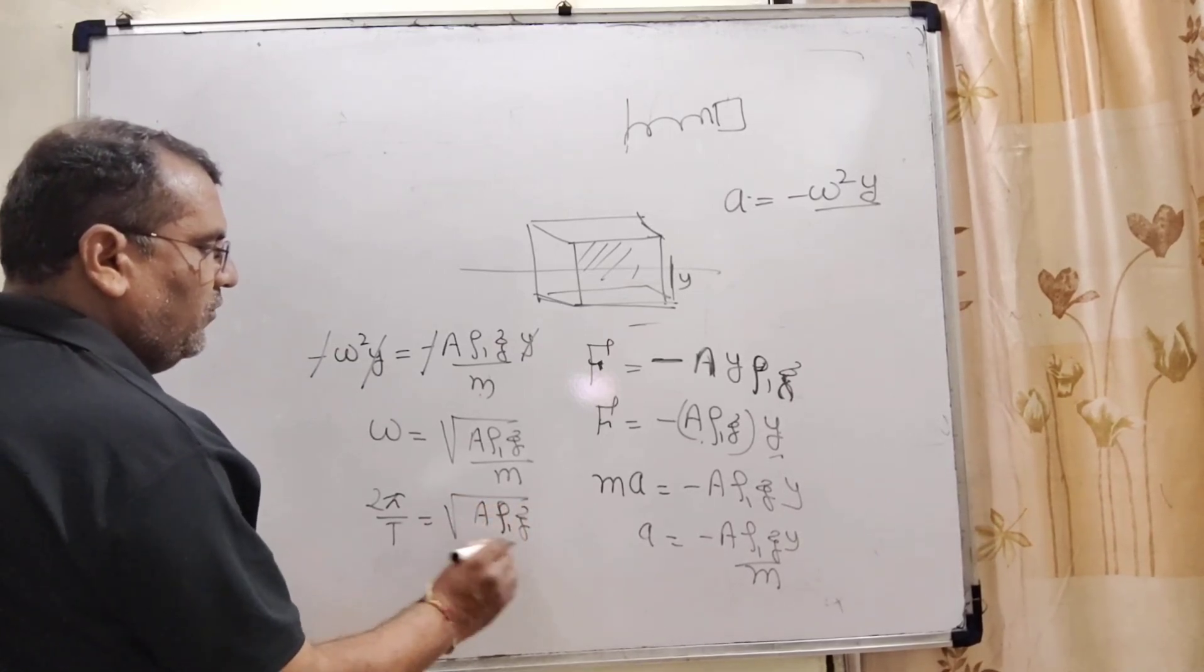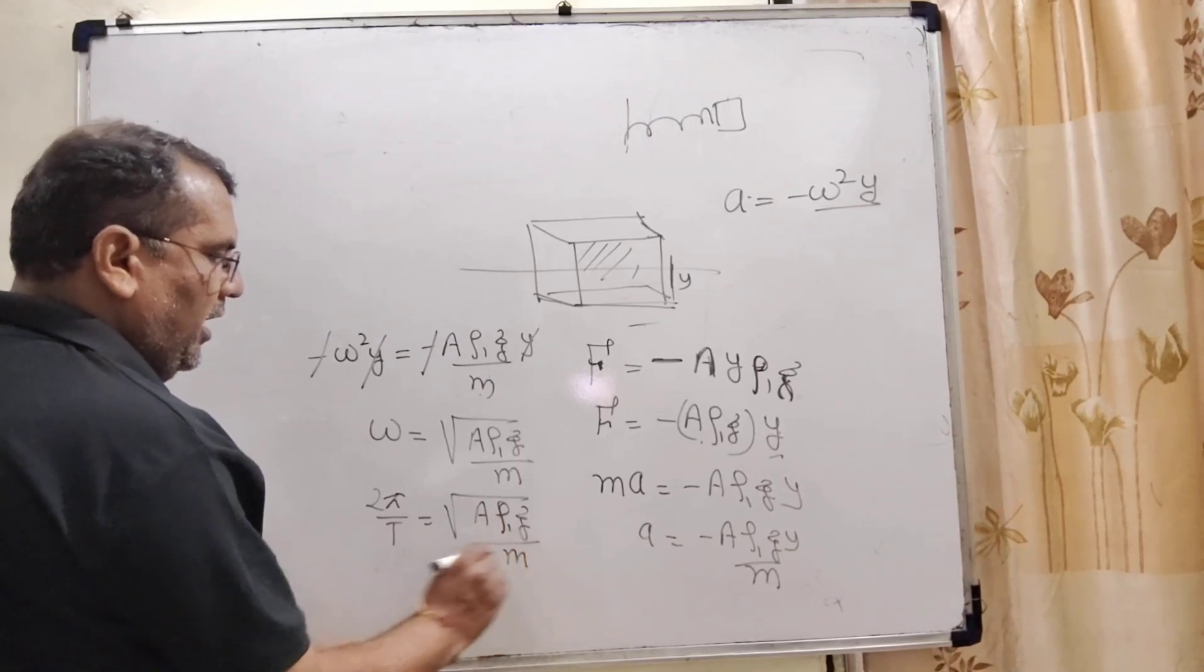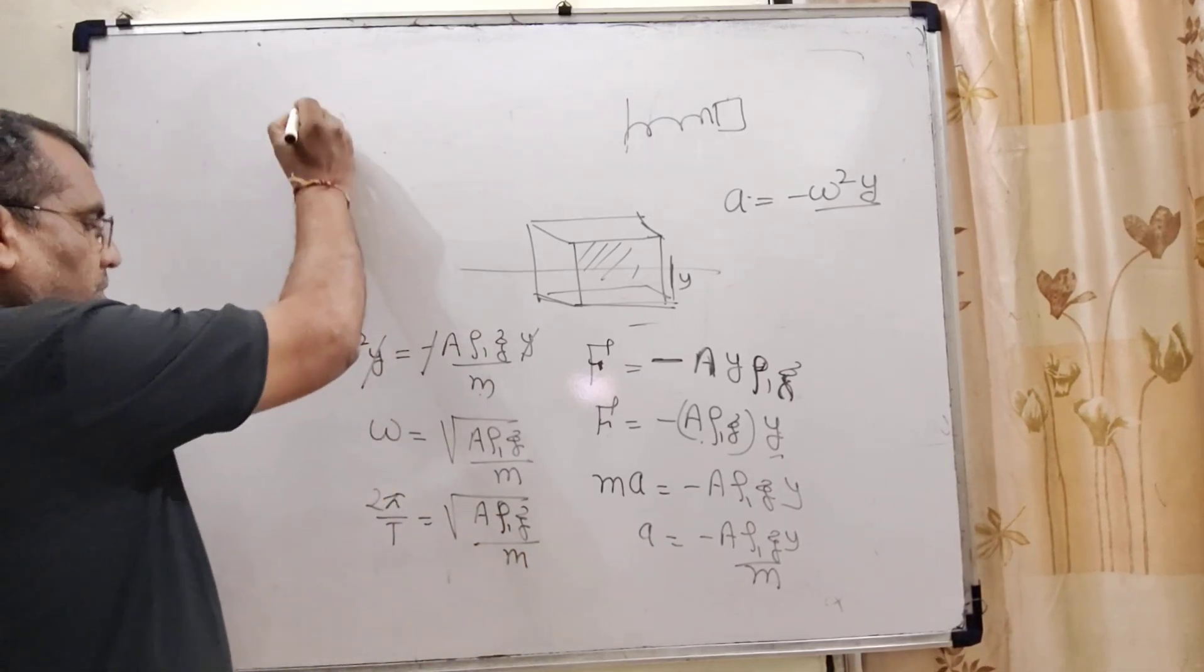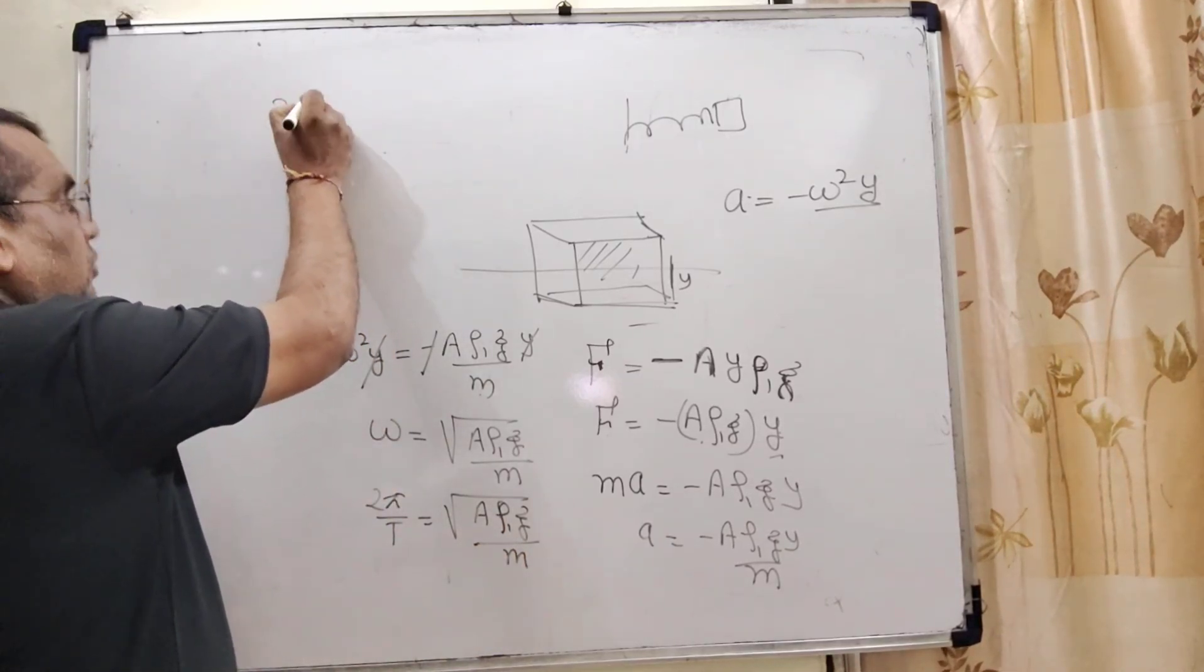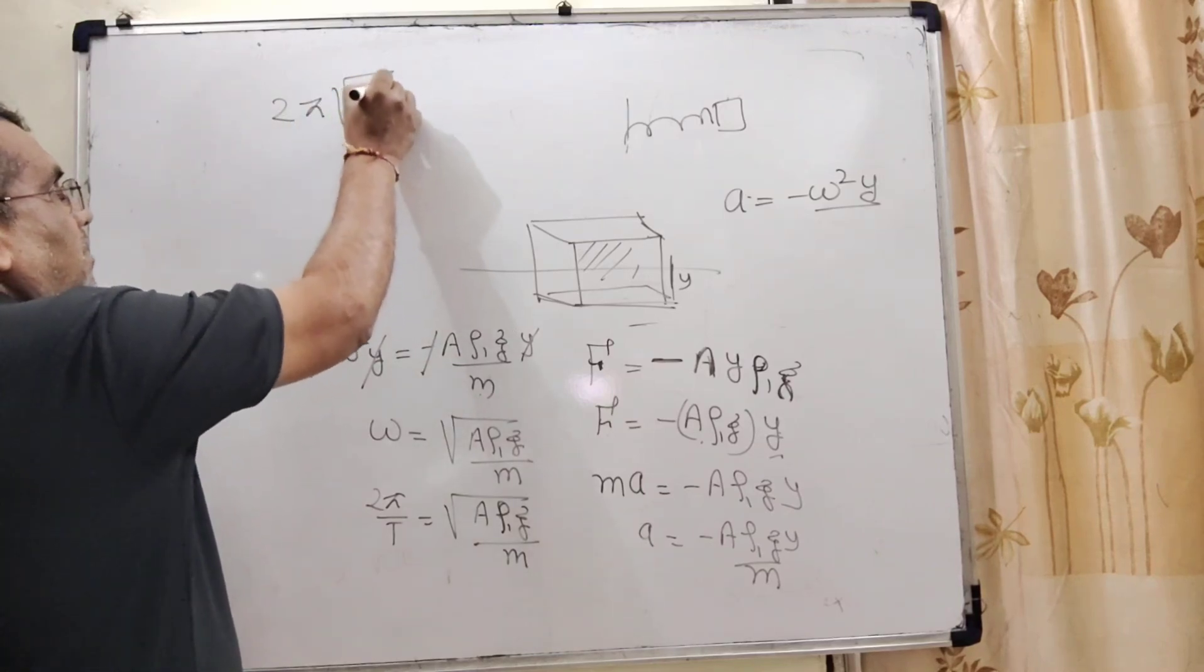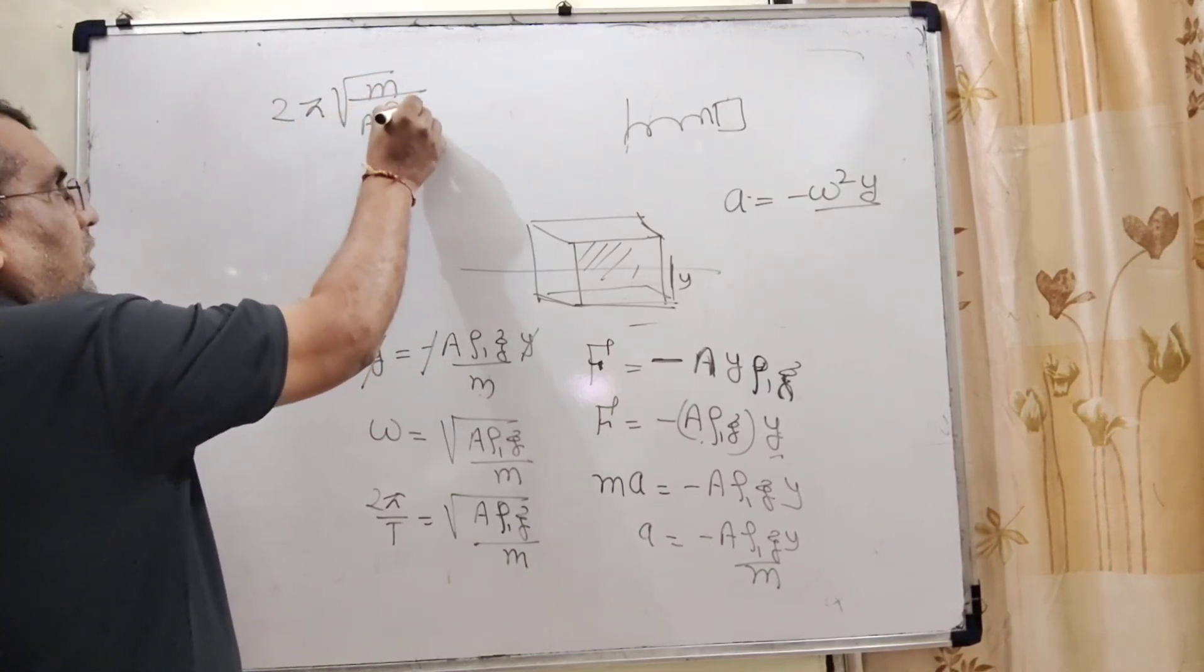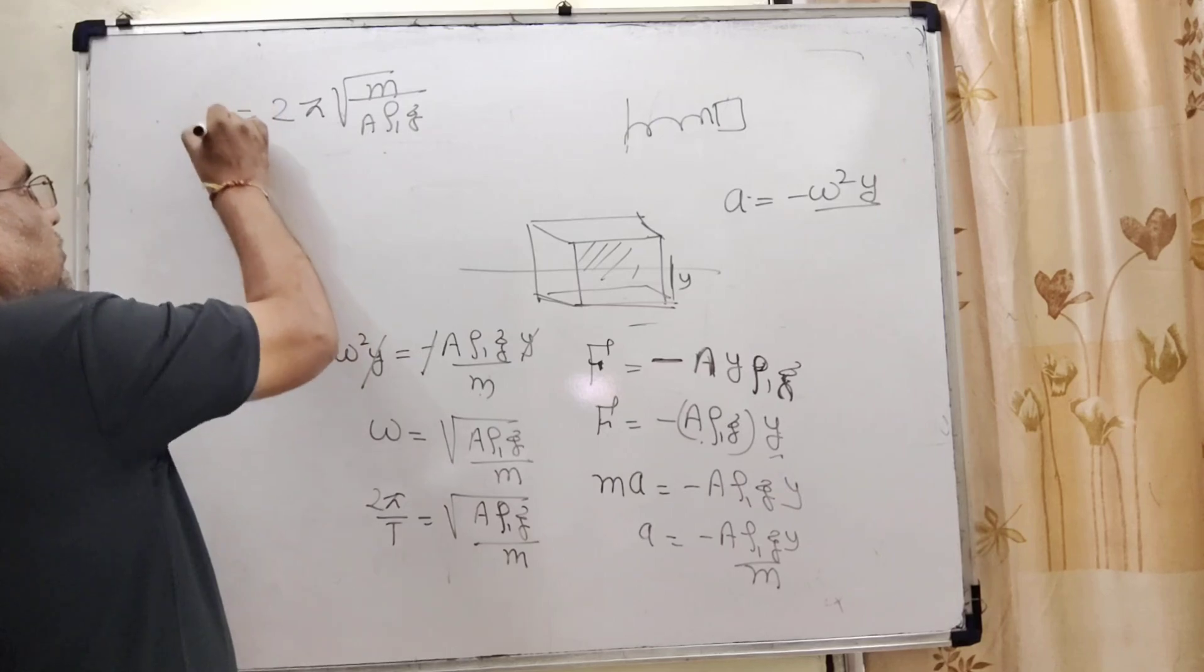Remember, ρ₁ is the density of water. So T = 2π√(m/Aρ₁g). Now substitute all values.